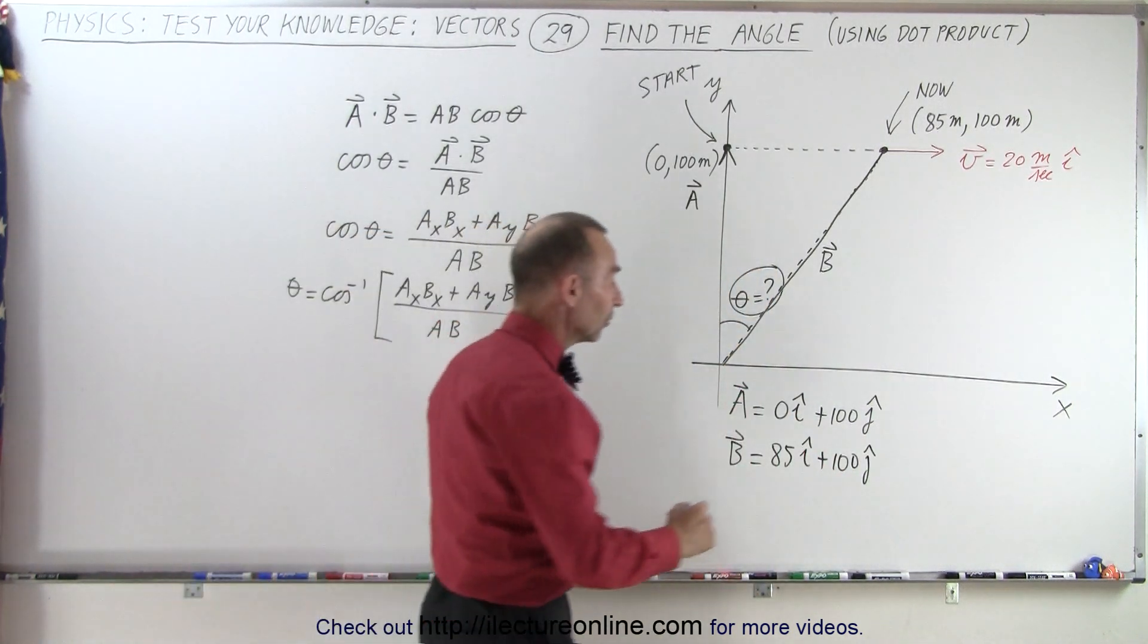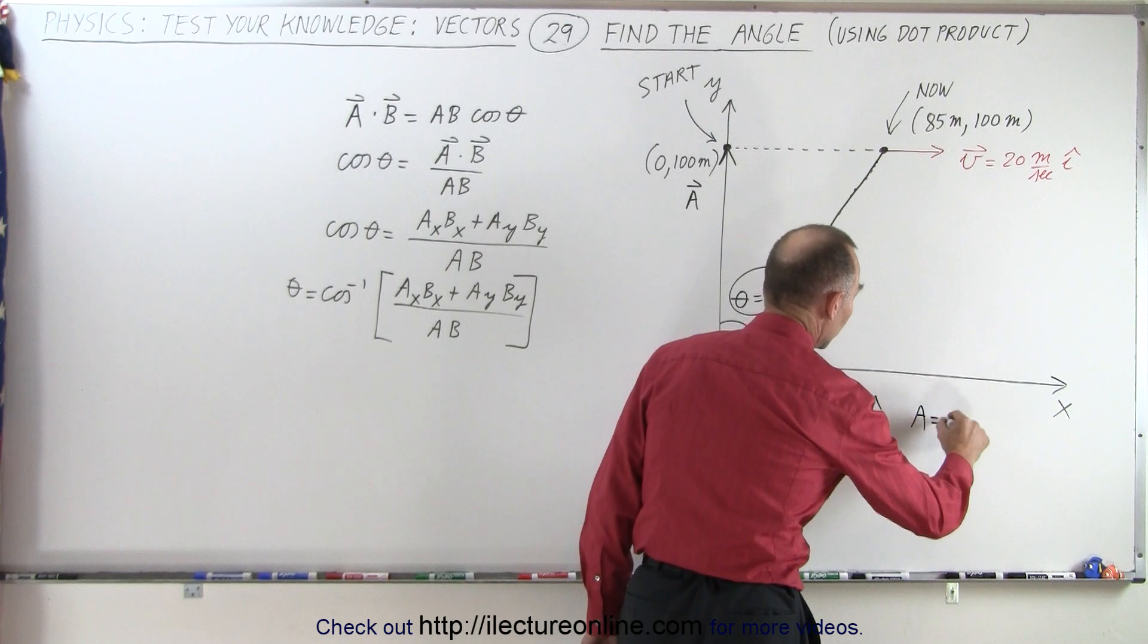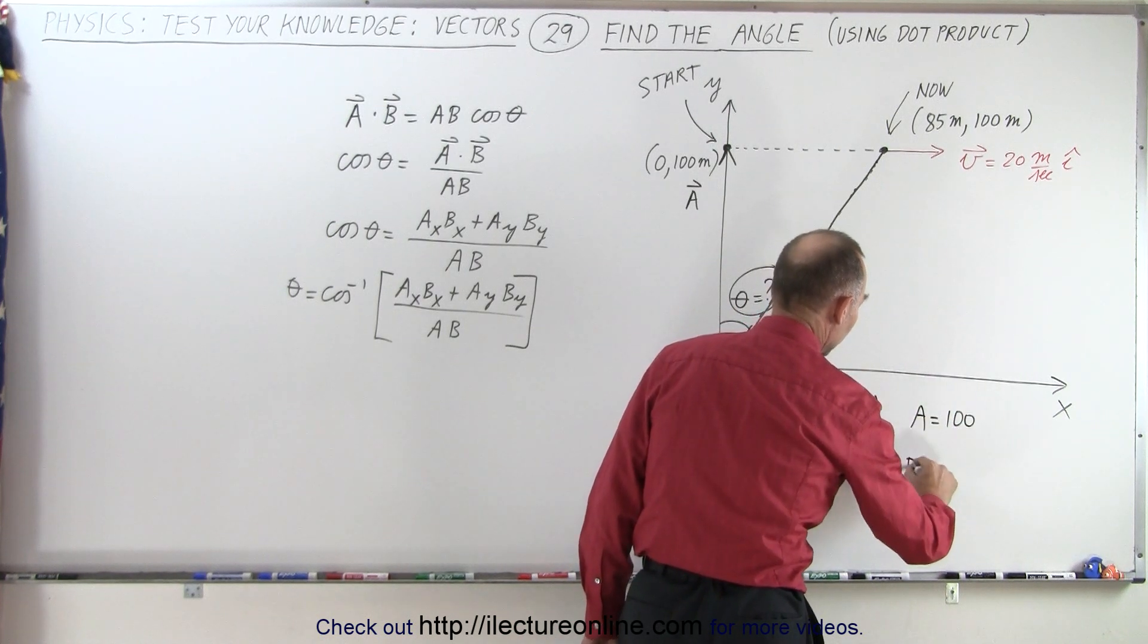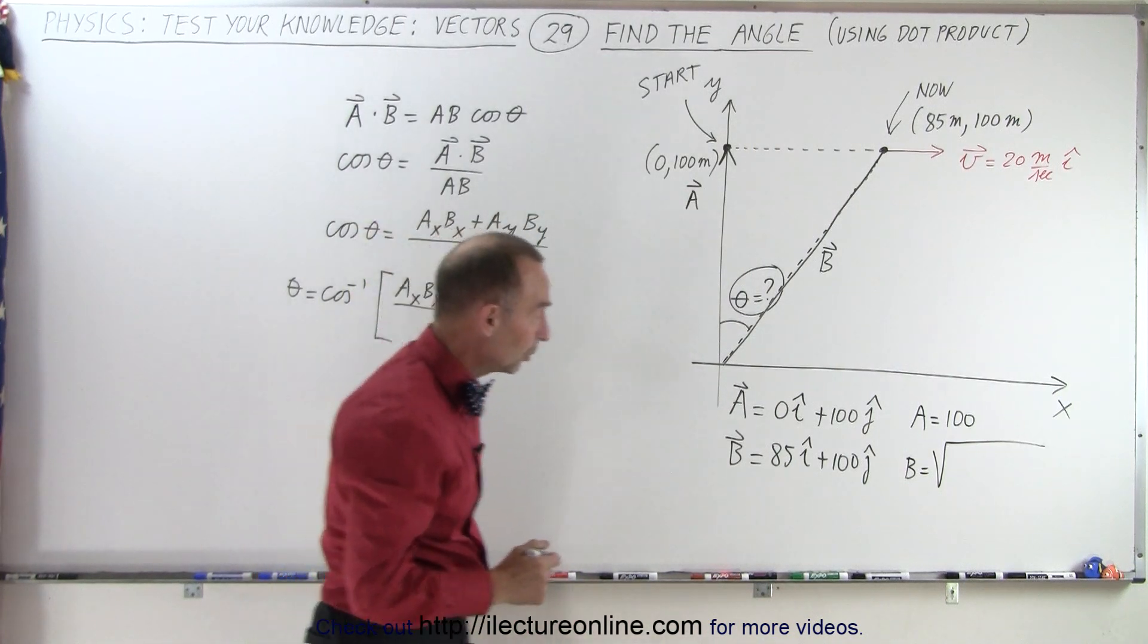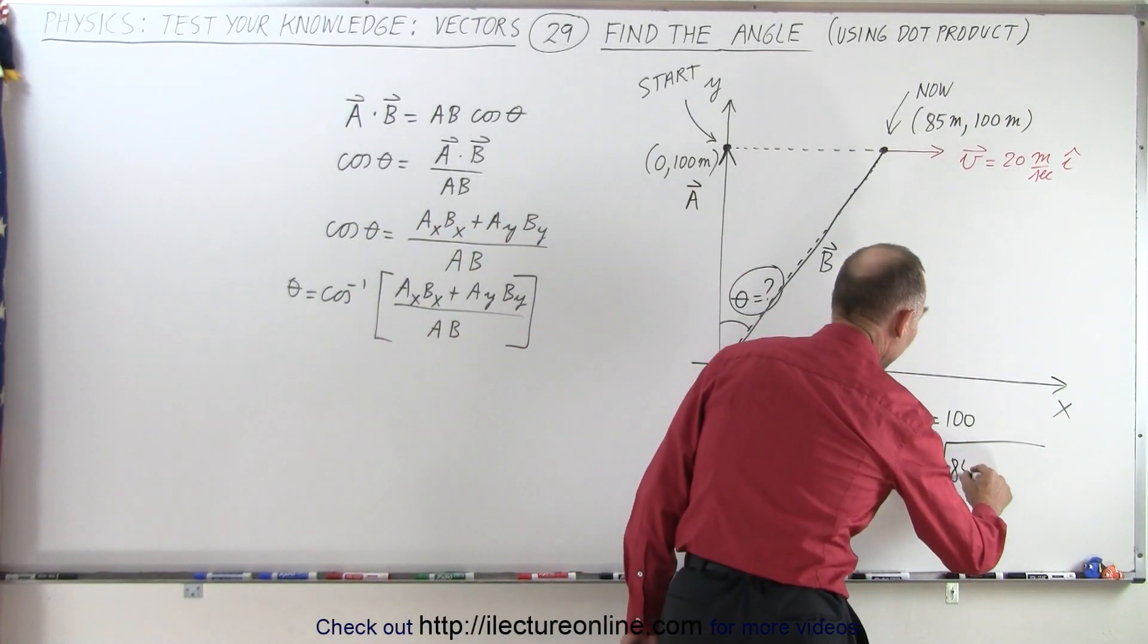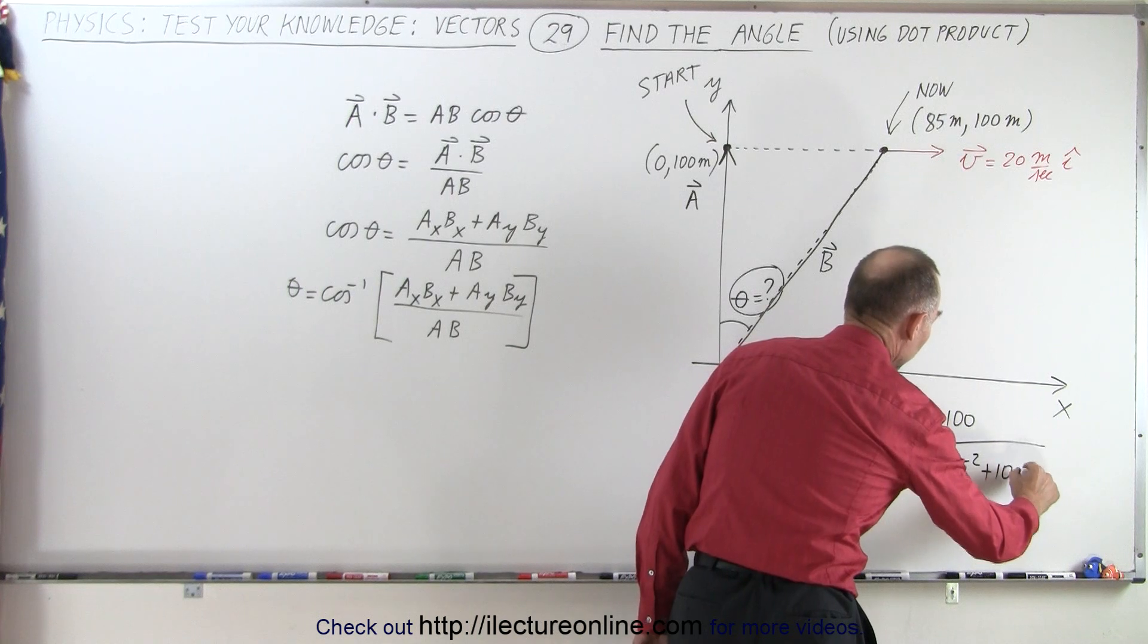We can then define the magnitude of a as simply equal to 100. But the magnitude of b is going to be equal to the square root of the sum of the squares of the components. So this would be 85 squared plus 100 squared.